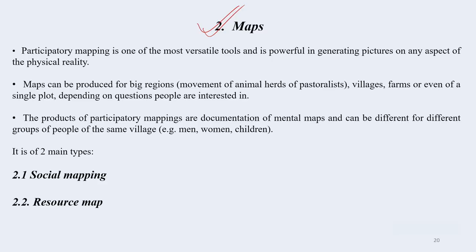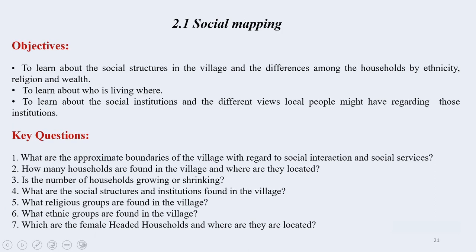Documentation of mental mapping is very important and can be different for different groups of people within the same village — it could be very different from one tribal group to another, one community to another. Do not be surprised if within one village you are getting two different sets of information; these are treasures. You must be open to these kinds of differences within one geographical unit — that is the beauty of participatory rural appraisal. In PRA we mostly use two kinds of participatory mapping: social mapping and resource mapping.